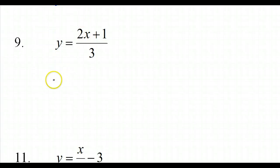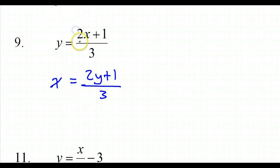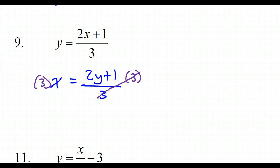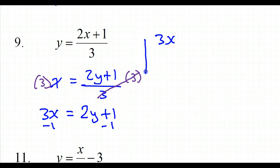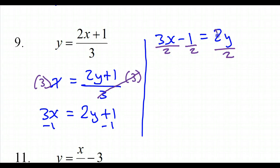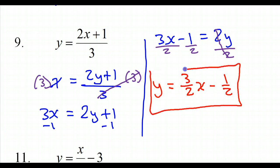Number 9: switch x and y and solve for y — giving x equals (2y plus 1) over 3. Multiply both sides by 3 to cancel the denominator: 3x equals 2y plus 1. Subtract 1 from both sides: 3x minus 1 equals 2y. Divide by 2 everywhere — those 2's cancel out — and the final answer is y equals 3/2 x minus 1/2. That is the inverse function for number 9.